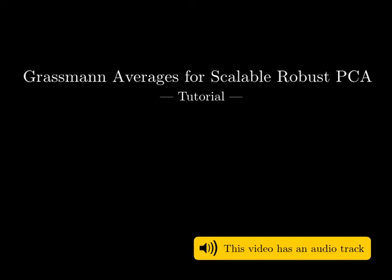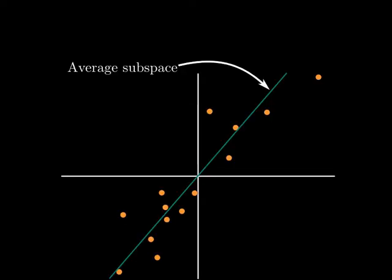We introduced the Grassmann average for robust PCA. Our key idea is to phrase subspace estimation as an average of all subspaces spanned by the data.